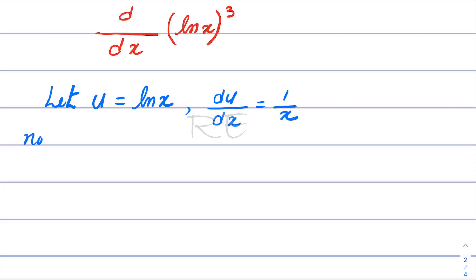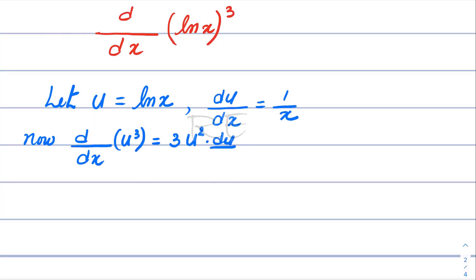According to the power rule, the derivative of u cubed, which is composite, will be 3u squared times du/dx.